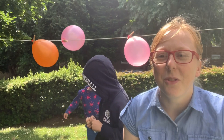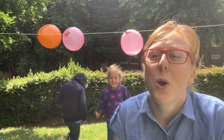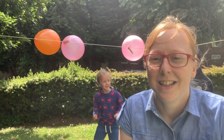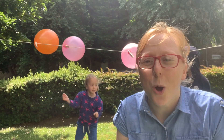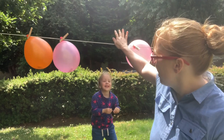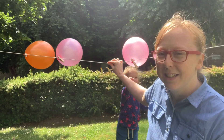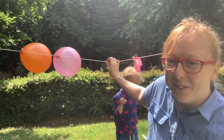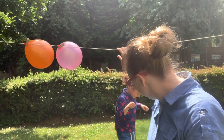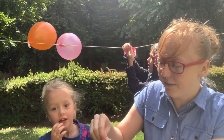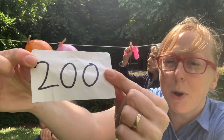Next question for the Amazing Amelia's team: What is 5 times 3? The answer is 15, or 1.5. Amelia pops the pink balloon — she gets 200 more points. You've had 700 points, now you have 900 points altogether. Well done!